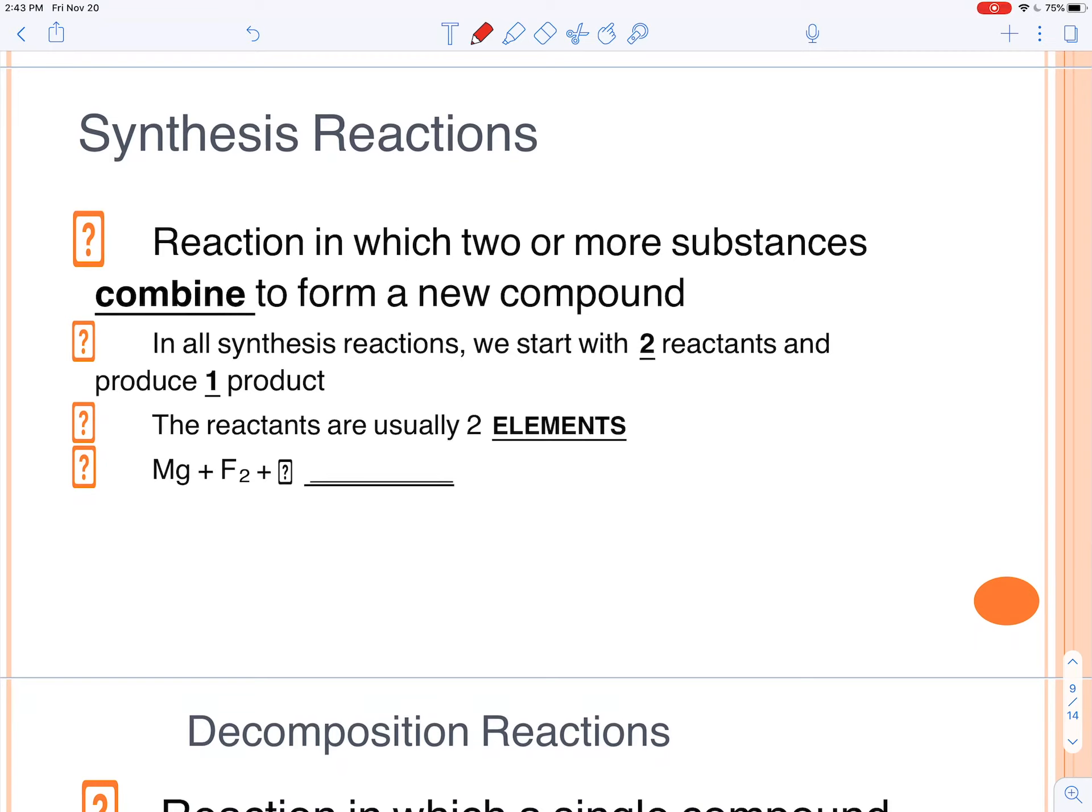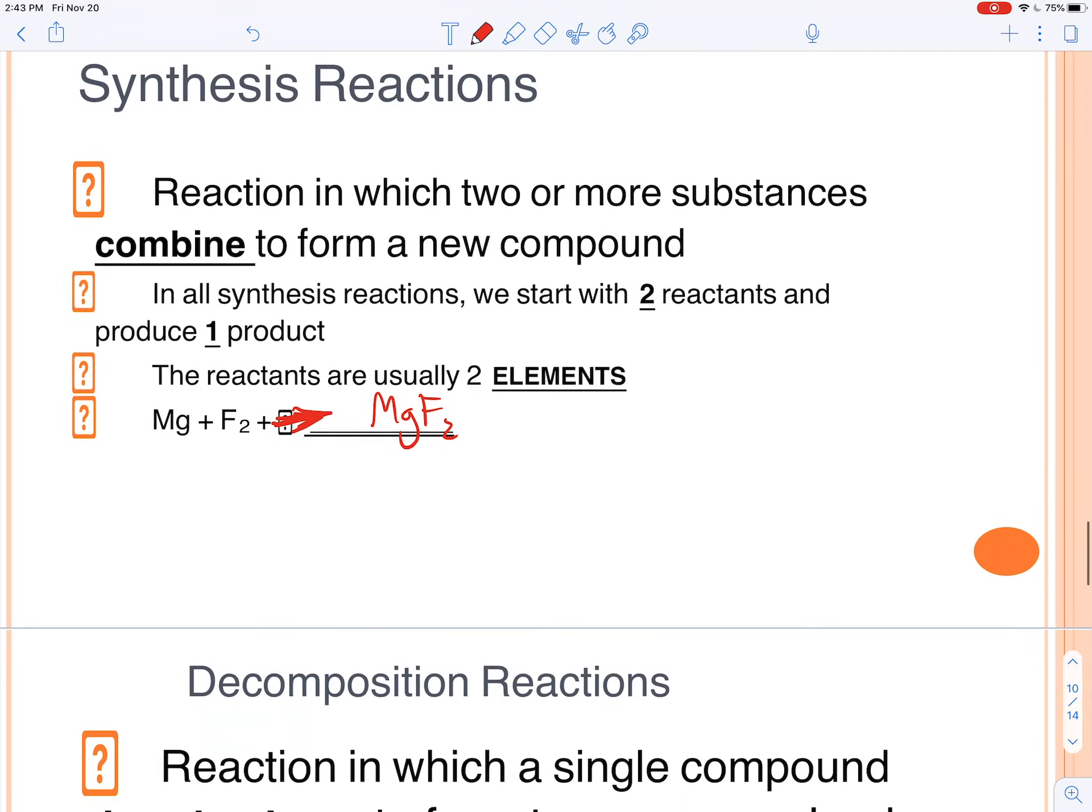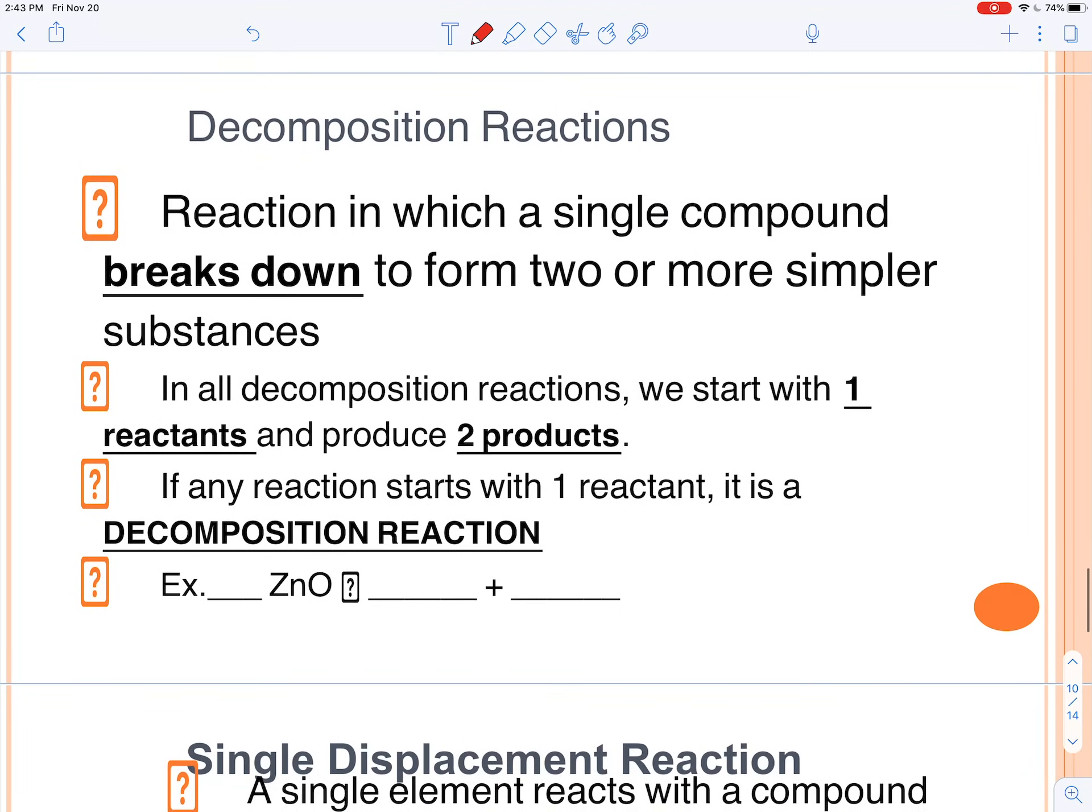Synthesis reactions. Here, remember, they only have one product. So here we simply combine these two elements together, and that's how you predict the product. You just combine the two reactants together, and usually that's going to work out. So two reactants and we form one product.